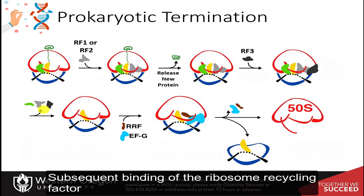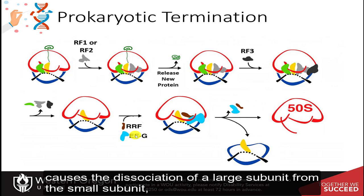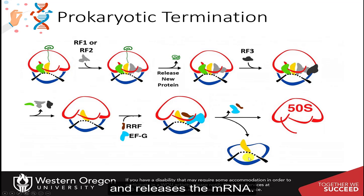Subsequent binding of the ribosome recycling factor RRF and EFG causes the dissociation of the large subunit from the small subunit and releases the messenger RNA.